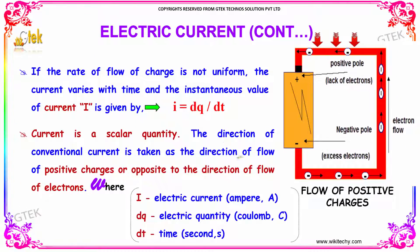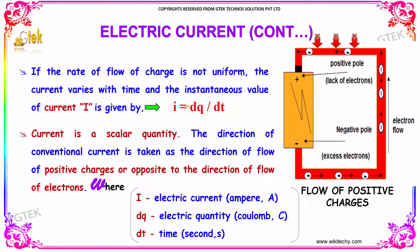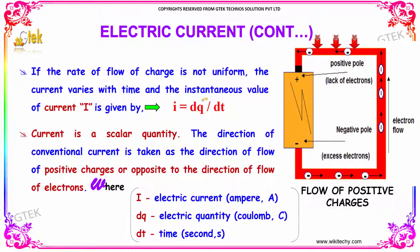If the rate of flow of charge is not uniform, the current will vary with time and the instantaneous value of current is given by dQ/dT.